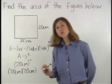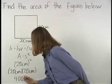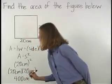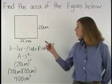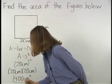which is equal to 400 centimeters squared. So the area of the square shown here is 400 centimeters squared.